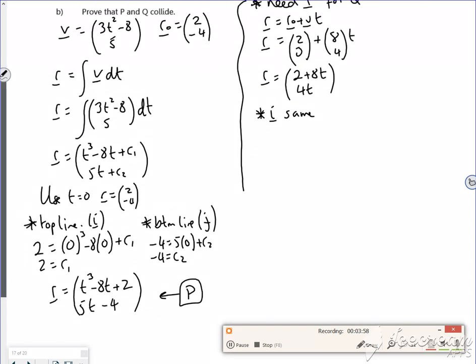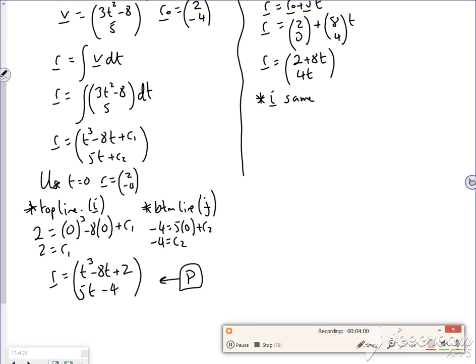So I'm going to get t cubed minus 8t plus 2 is the same as 2 plus 8t. So the 2's go. I'm going to have minus 16t, and so t cubed minus 16t is 0. So that's going to give me t is 0, t is 4. Actually it would be plus or minus 4. But we get rid of the minus. So it's actually plus or minus 4.